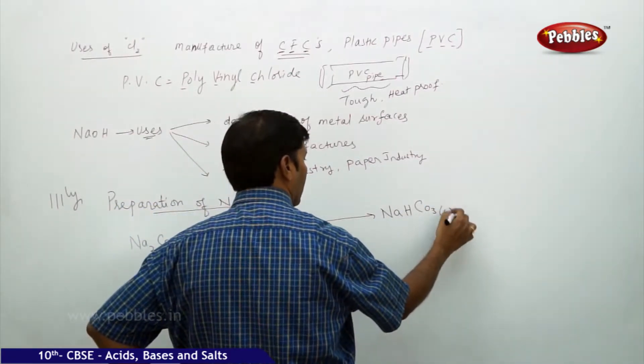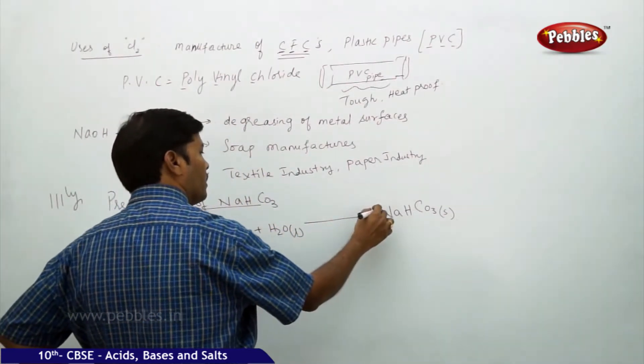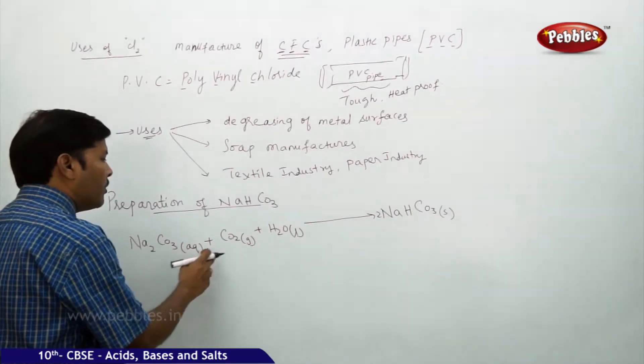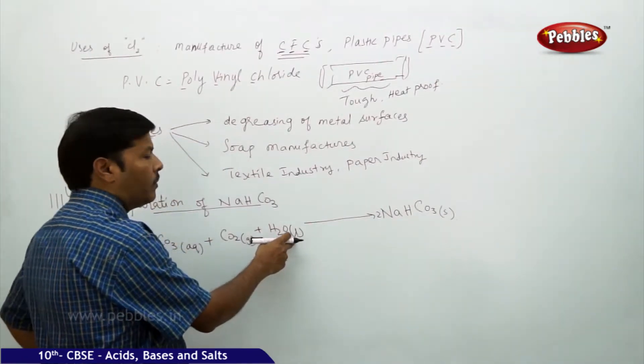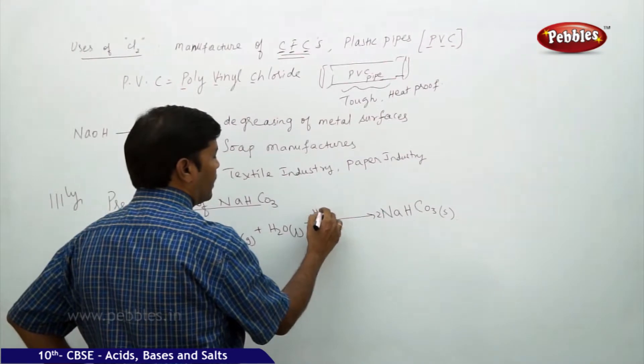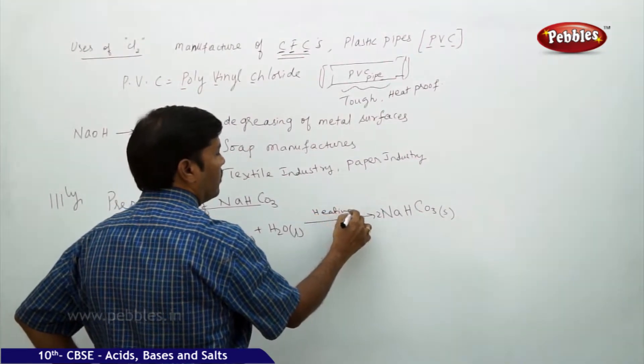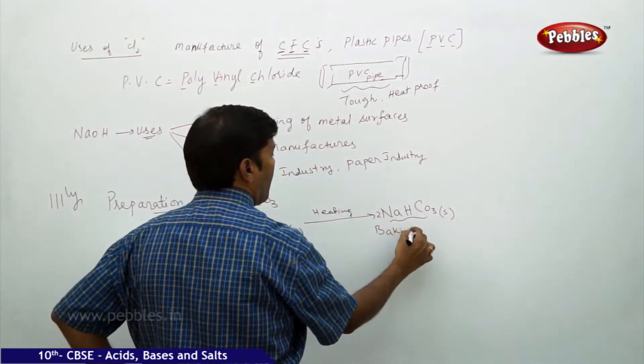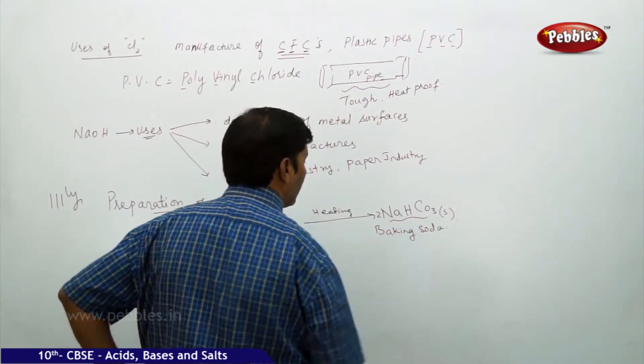To balance the equation, take two over here. That means one mole of sodium carbonate reacts with one mole of carbon dioxide in the presence of one mole of water. Upon heating you get one mole of baking soda.